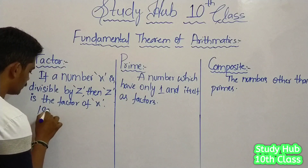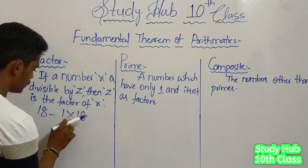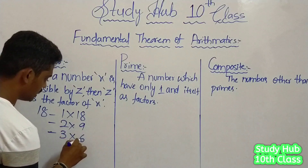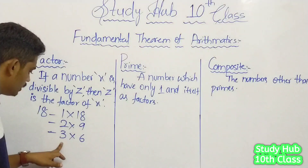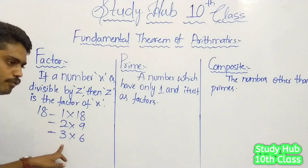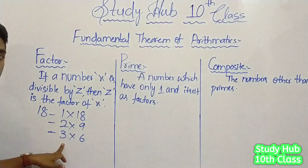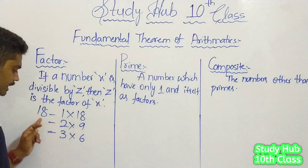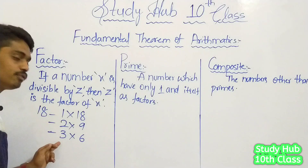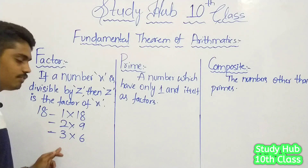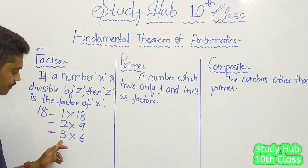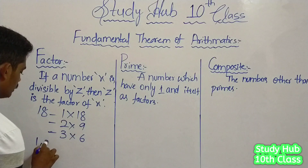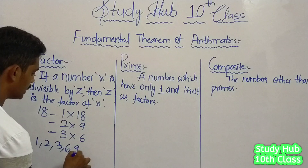Let us take one more example — 18. 1 × 18 = 18. After 1, 2 × 9 = 18, 3 × 6 = 18. After 3, if we take 4: 4 × 4 = 16, 4 × 5 = 20 — we don't get 18 in the 4 table, so 4 is not a factor of 18. Similarly, 5 is not a factor of 18. For 6: 6 × 3 = 18, but we already got 3 × 6. So the factors of 18 are 1, 2, 3, 6, 9, and 18.